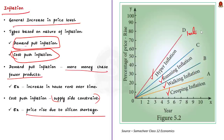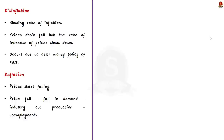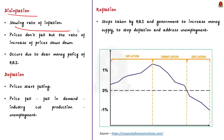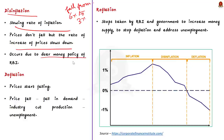Now let us move on to disinflation. Disinflation is nothing but a slowing rate of inflation. For example, if the rate of inflation falls from 6% to 3%, disinflation is said to have occurred. During disinflation, prices don't fall, but the rate of increase of prices slows down. This actually occurs due to the steps taken by the RBI. We saw that the RBI increased the repo rate — this will lead to a reduction in the rate of inflation, that is, an increase in repo rate by the RBI will lead to disinflation. Make note of this point.